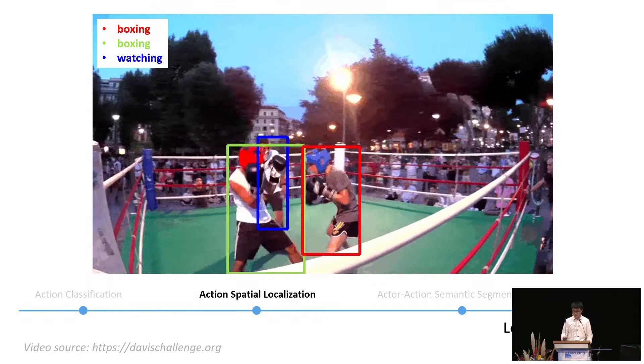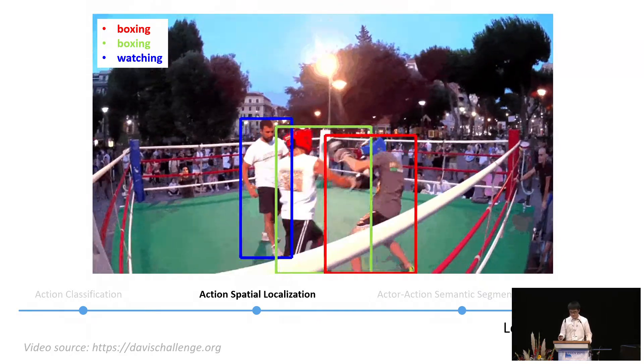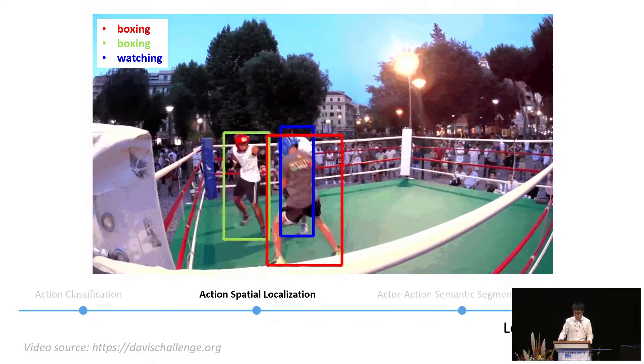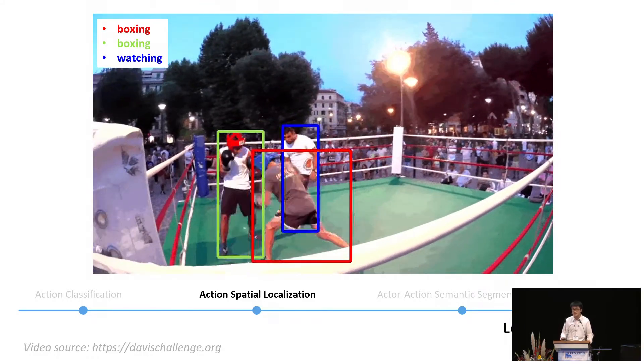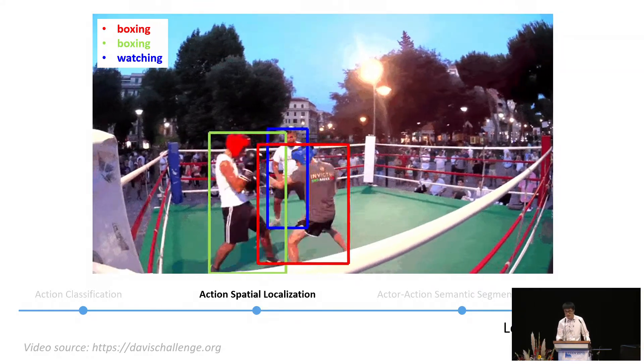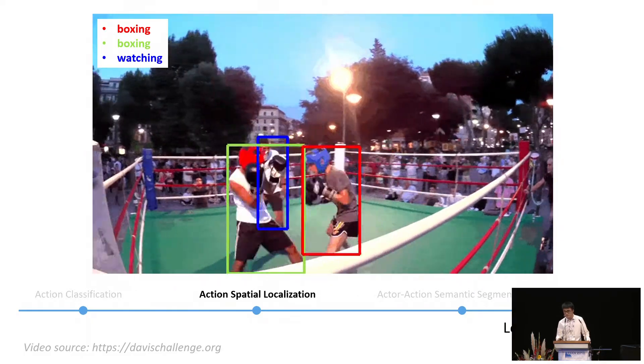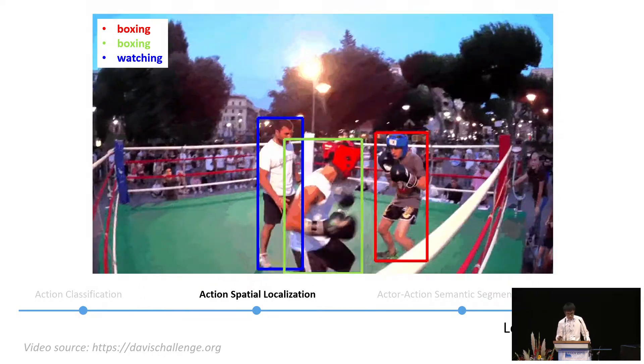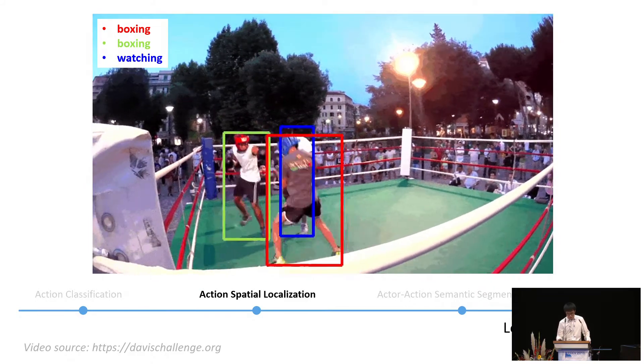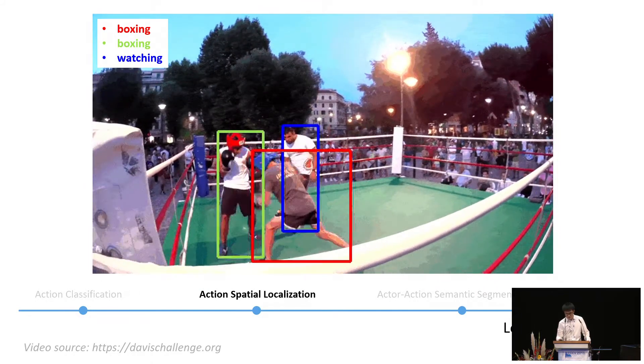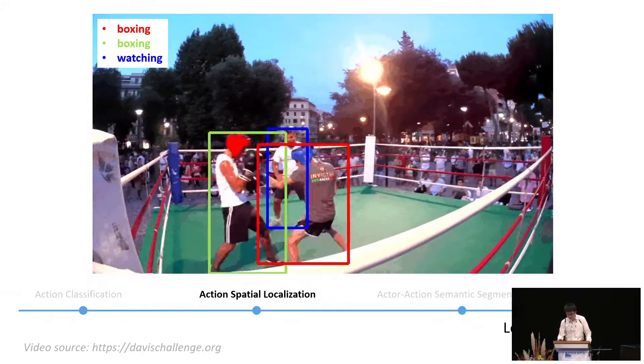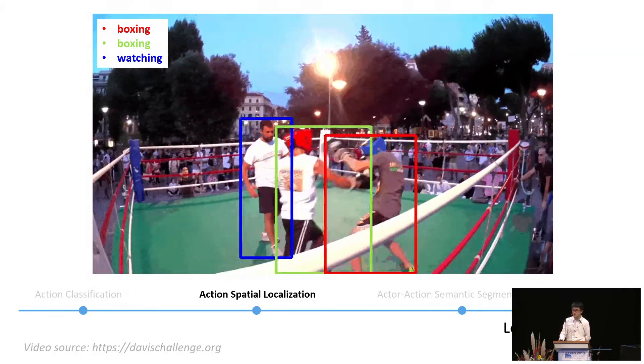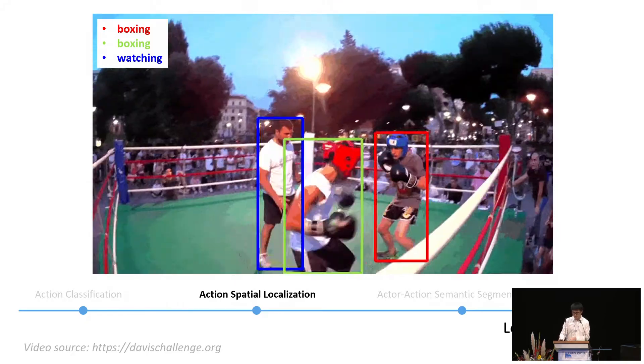However, such video level output is still quite coarse as it does not provide any spatial information about the actions. A more detailed algorithm could produce not only what action is occurring in the video but also where it is happening. We call this setting action spatial localization where the algorithm produces labels attached to bounding boxes around each actor. In this example, there are several action instances in a boxing scene and to have a more comprehensive understanding, we should know where each actor is and what each of them is doing individually. Here we have one person watching and the other two boxing.